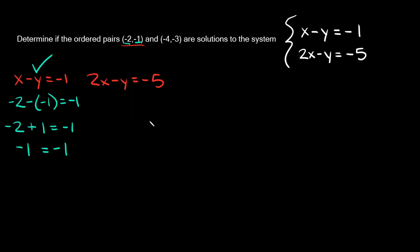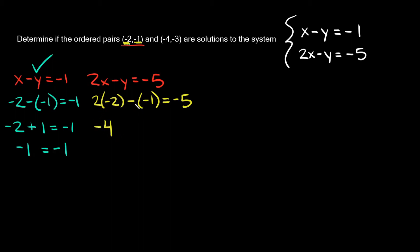Now we have to check the other equation. So again I'm going to plug in negative 2 for my x and negative 1 for my y. So we're going to have 2 times x, which is negative 2, minus y and our y is negative 1, and we're setting that equal to negative 5. So then 2 times negative 2 is negative 4, and then minus a negative number is the same thing as adding, so plus 1, and we're setting that equal to negative 5. So negative 4 plus 1 is equal to negative 3.